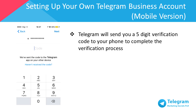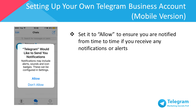Confirm your country code and then key in your phone number to complete the signup process. Telegram will then send you a five-digit verification code so you can complete the verification process. You'll then be prompted by Telegram to receive notifications — I recommend that you allow this, to ensure that you receive notifications or alerts from other users.